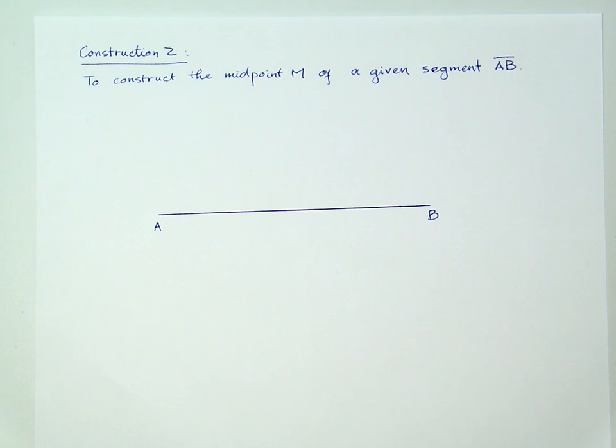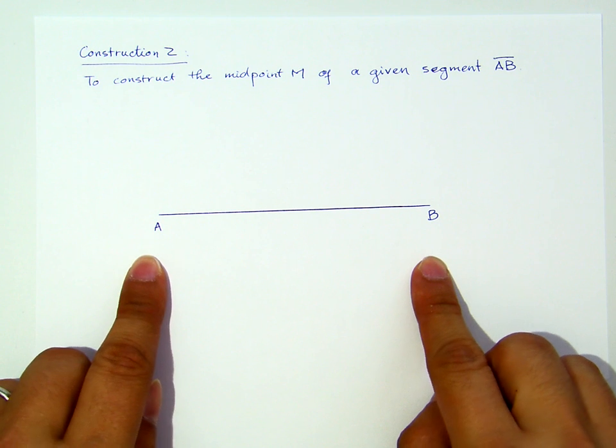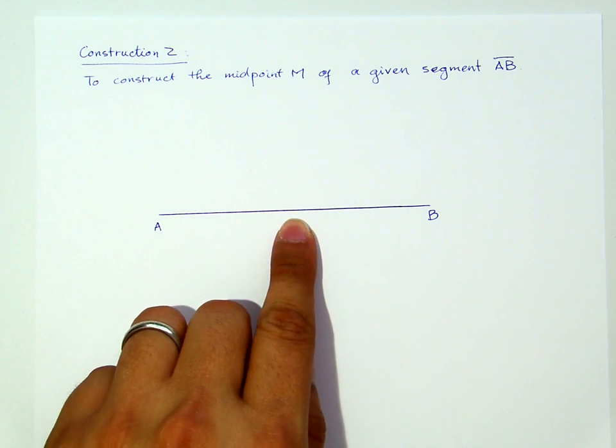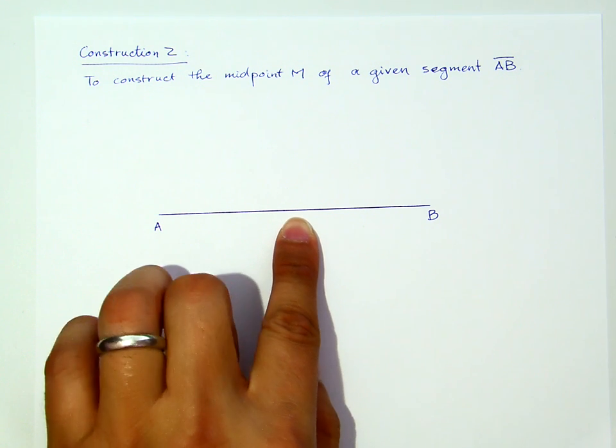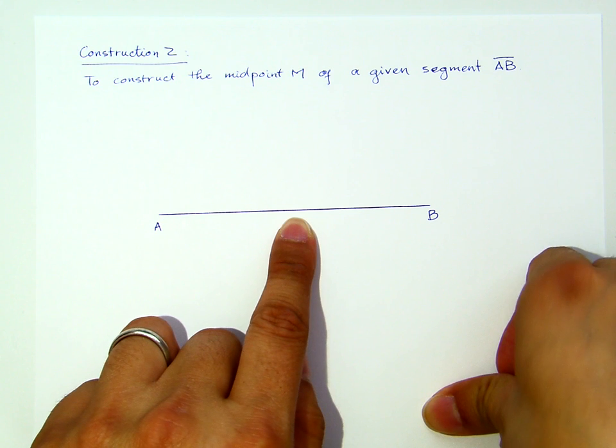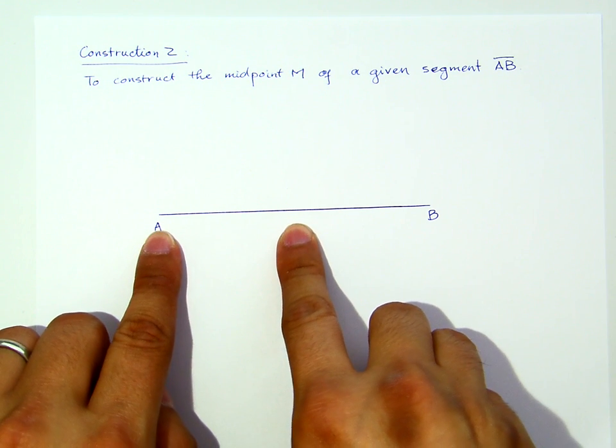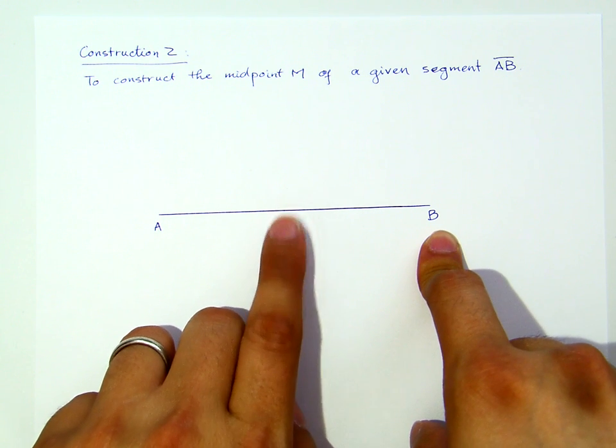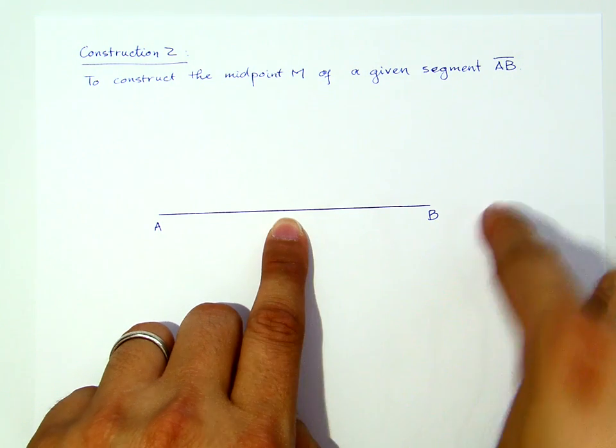The following is to demonstrate construction tool 2, which is to construct the midpoint M of a given segment AB. Suppose I have a line segment here with endpoints A and B. What I am about to do is locate the point in the middle, let's call that point M, such that segment AM is congruent to segment BM. So basically we want to find a point in the middle that has the same distance to A and to B.